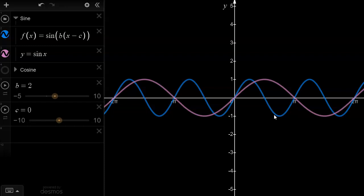What you need to know is that the b value affects the period of the graph, but please don't interpret the b value itself as the period. The b value is 2, but the period of this graph is pi.